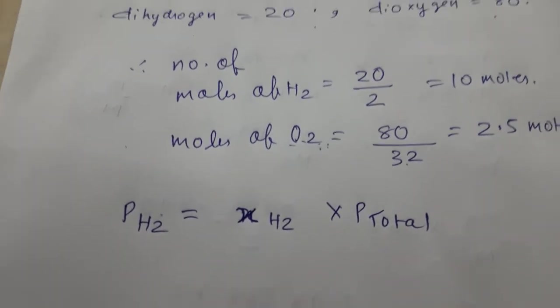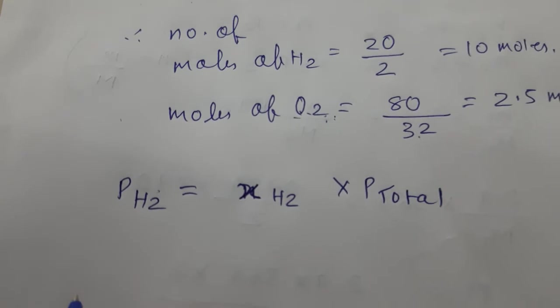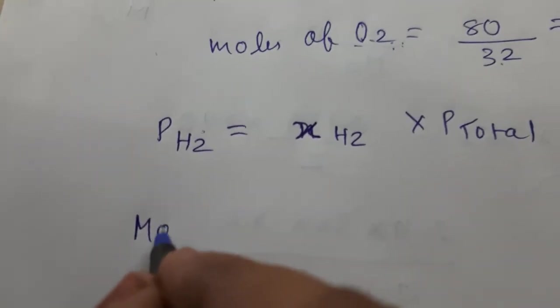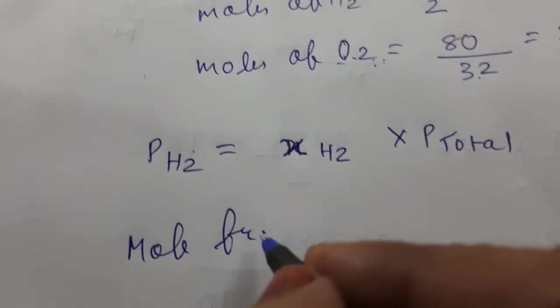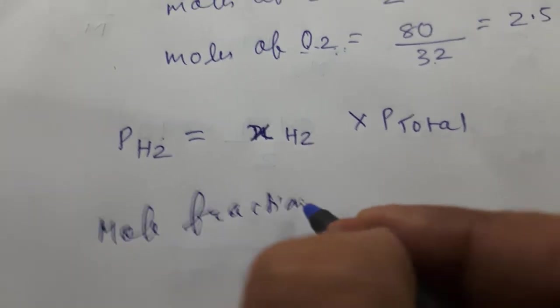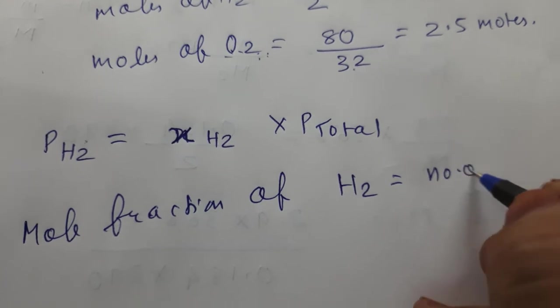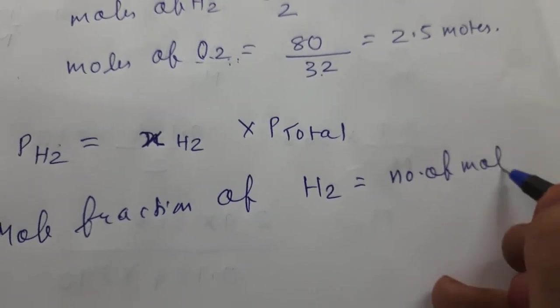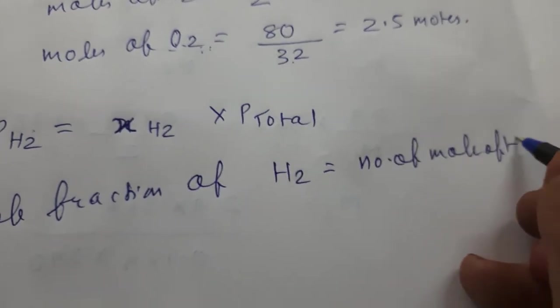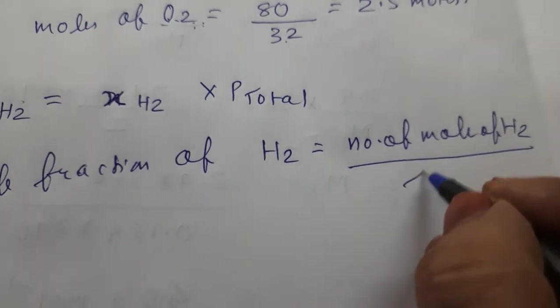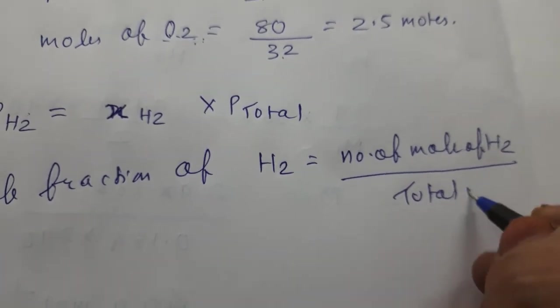Understood? How do we calculate mole fraction? Mole fraction of dihydrogen equals number of moles of H2 divided by total moles.